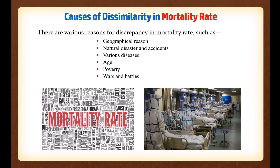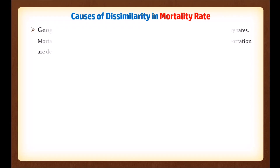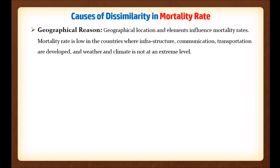On the right side you can see a picture about a pandemic situation — when a pandemic is ongoing, the mortality rate is very high. The first cause is geographical reason. Geographical location and elements influence mortality rates. Mortality rate is low in countries where infrastructure, communication, and transportation are developed and where weather and climate is not at an extreme level.